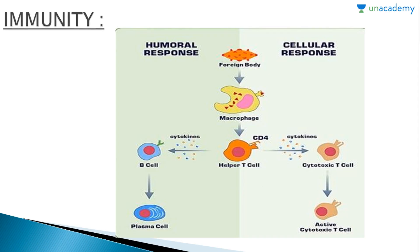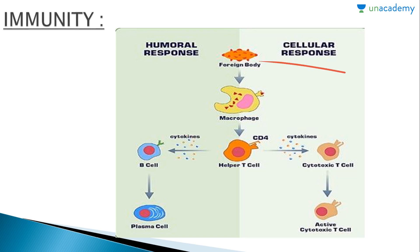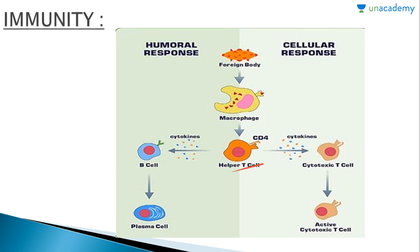Referring to the diagram: when a foreign body enters our body, a macrophage — acting as a mother cell — sends information to the helper T cell, which has receptors like CD4. In the humoral immune response, helper T cells help B cells via cytokines to develop receptors against the foreign body, forming plasma cells that produce antibodies to kill or subdue the foreign antigen. In the cellular response, helper T cells produce cytotoxic T cells, which produce cytotoxic hormones or enzymes that degrade the foreign particle.